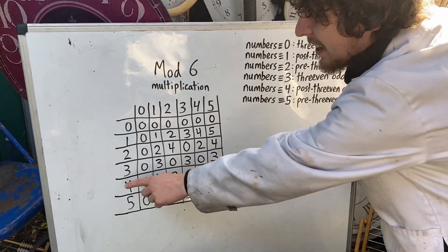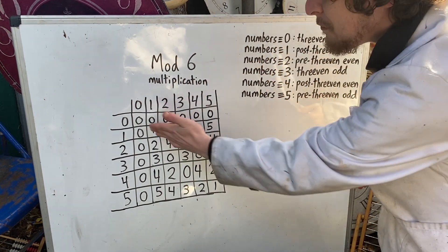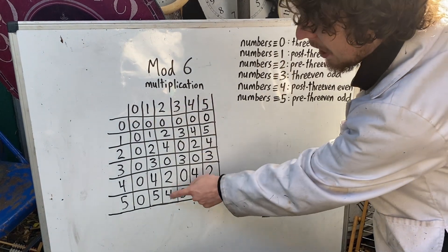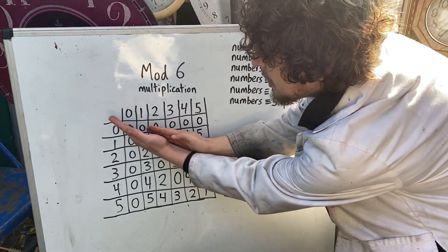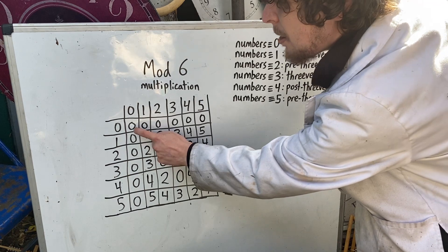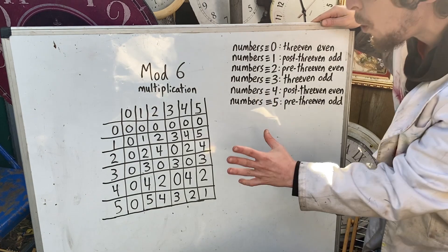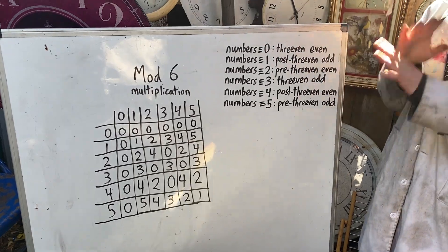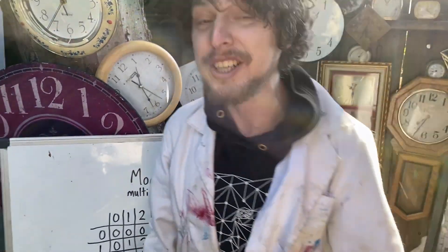All of these modular multiplication charts will have a sort of symmetry because two times five would be the same as five times two, so we're going to see a symmetry across this diagonal axis. In fact, the numbers that lie in this diagonal line are going to be pretty important, so keep an eye out for the diagonal line as we transition forward to mod 12, similar to a clock.